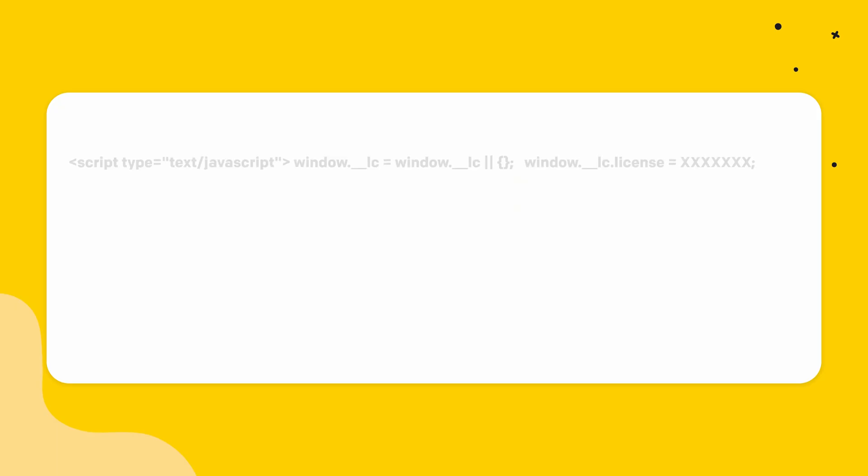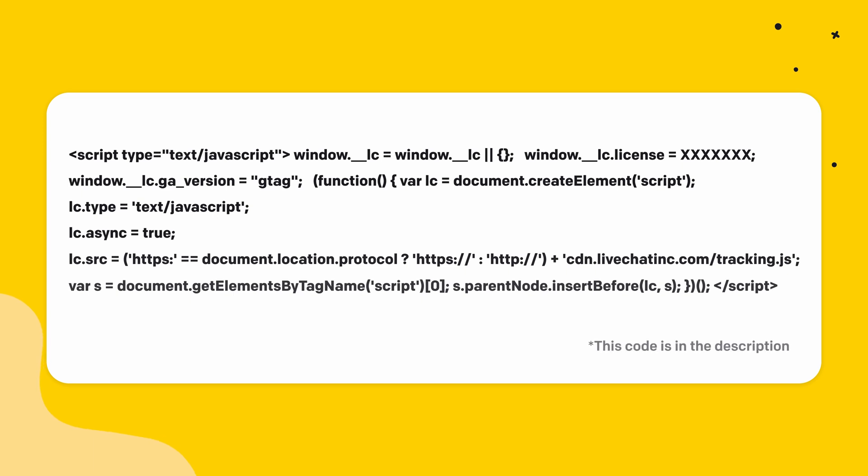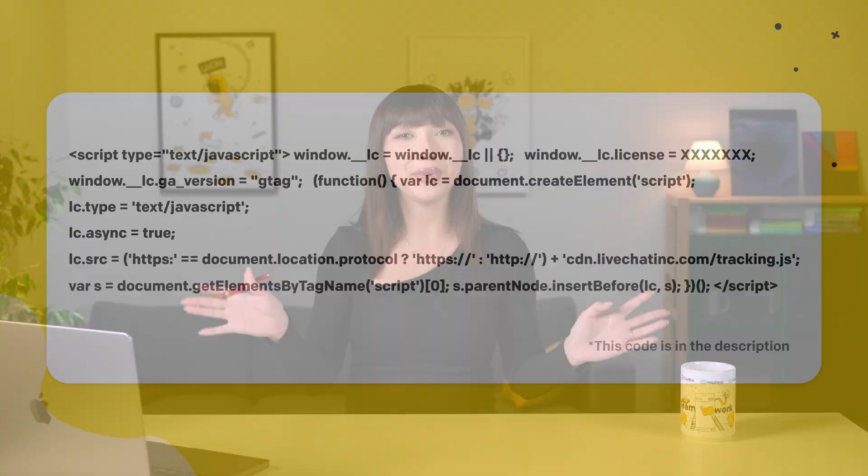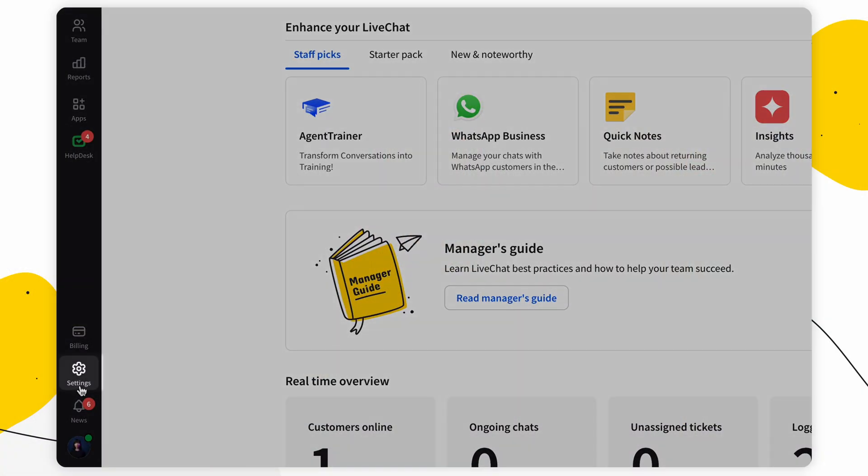If you are using several different versions of the Google Analytics code, you can let LiveChat know which version to use for the integration by adding a parameter to your LiveChat tracking code. Depending on which instance of the code you want to track, you can use the following values: GTM, g-tag (Global Site Tag). After selecting the values to track, place the additional piece of code in your LiveChat tracking code under your license number. I'll leave this code in the description for you — feel free to copy it and use it on your own website. Just remember to replace the X's with your own license number. Both your code and license number can be found in Settings.